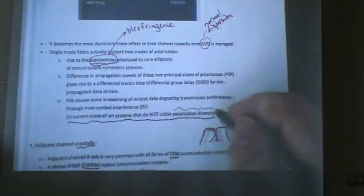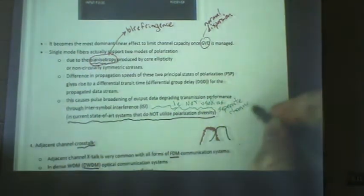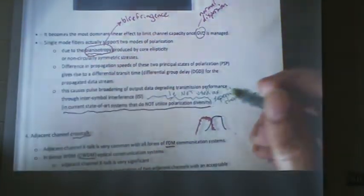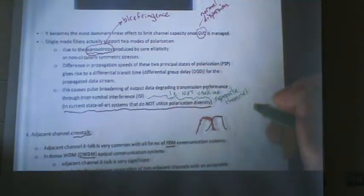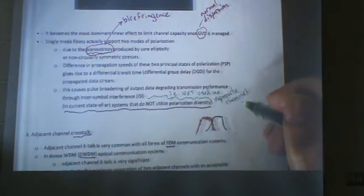Current state-of-the-art systems do not utilize polarizations as different channels. So, diversity, like antenna diversity, means I use it as a different channel. So, not utilized, i.e., not used as separate channels. But it could be if we could control them. Right? And just like sine and cosine, see how everything connects with everything else.